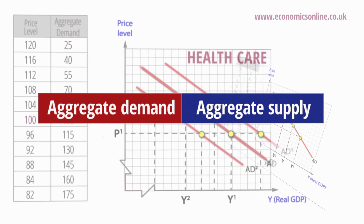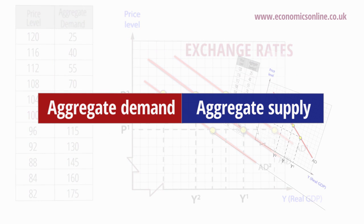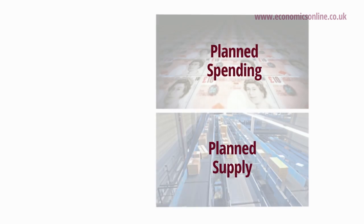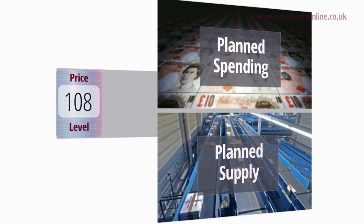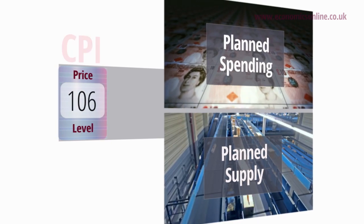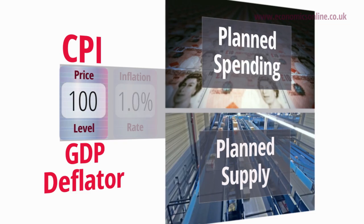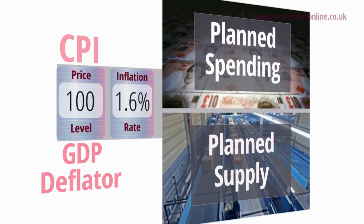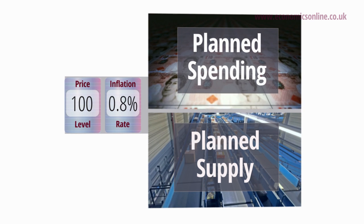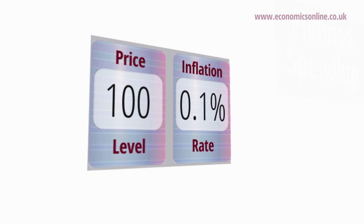There are two ways the ADAS model can be constructed. Firstly, the levels version, which analyzes how the economy's planned spending and planned supply are related to the economy's price level, the average level of prices as measured by an index such as the CPI or the GDP deflator. The second version looks at the rates of growth in output associated with different rates of inflation, expressed as percentages. This version is more complex and is not generally used at A-level.